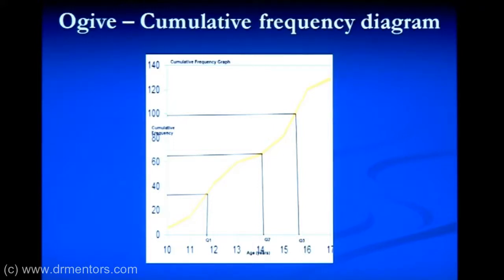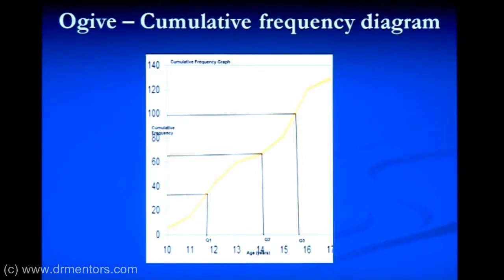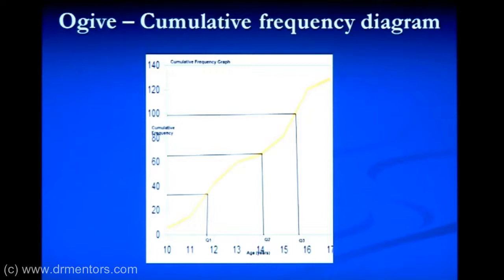This image is showing an Ogive, which is a cumulative frequency diagram. In one exam, the question was: 'Cumulative frequency diagram is also known as?' — and the answer is Ogive. In this diagram, the x-axis shows age and the y-axis shows the number. At 10 years of age it starts with almost 5 children; at 11 years, almost 15 children — that includes 5 children of age 10 plus 6 of age 11. When you reach age 16, the value is 100 children, meaning up to 16 years we have 100 children total. That is cumulative frequency.